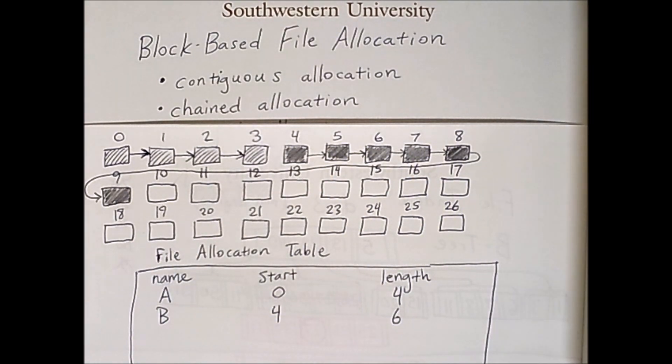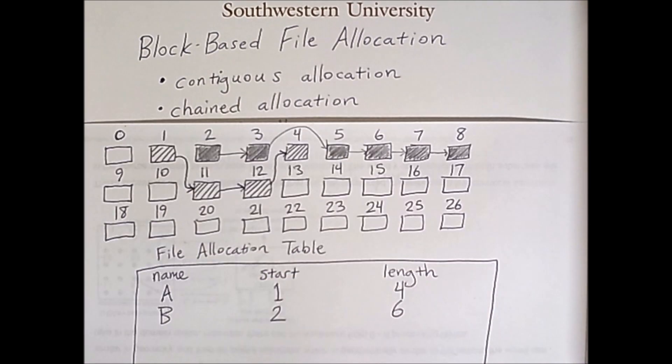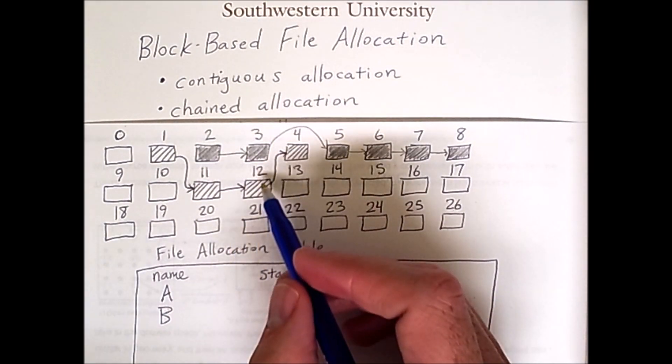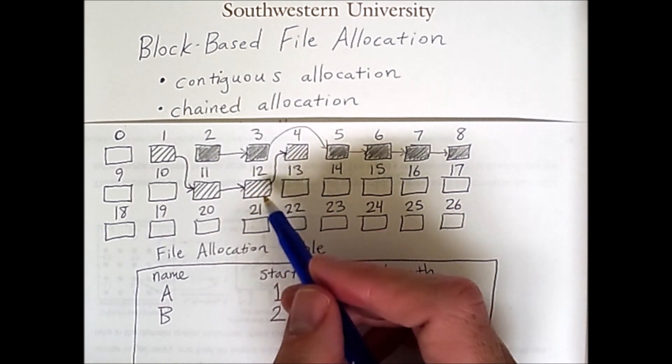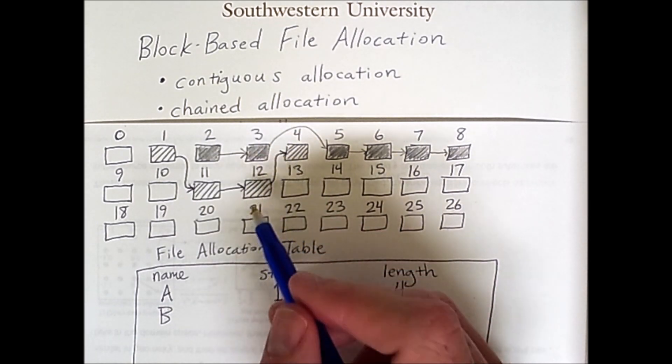So chained allocation does have an efficiency issue when it comes to looking up blocks. Now one issue that I mentioned with chained allocation was that we don't know where the next block is until we've read the pointer in the previous block. In fact if I go back to the non-consolidated version of this disk we can see once again that the computer does not know that block 4 is needed until block 12 is read. So this creates some inefficiencies. How can we get around this?